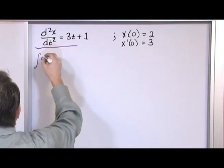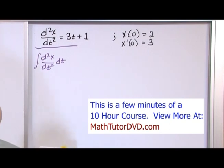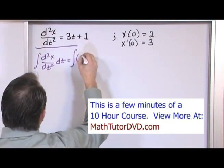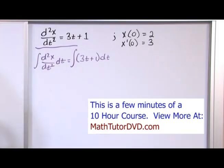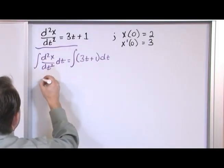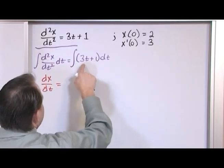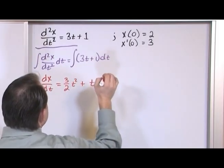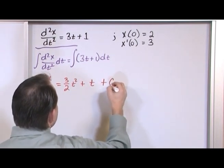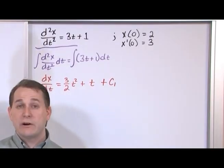So I'm going to take the integral of the second derivative of x with respect to time, integrating with respect to time, and carry that integral over to 3t plus 1 dt. On the left-hand side, the second derivative turns into a first derivative because I've taken one integral. On the right-hand side, it's going to be 3 halves t squared plus t. Since it's an indefinite integral, I'll label the constant of integration c sub 1, because I know I'm going to integrate again and will have a c sub 2.